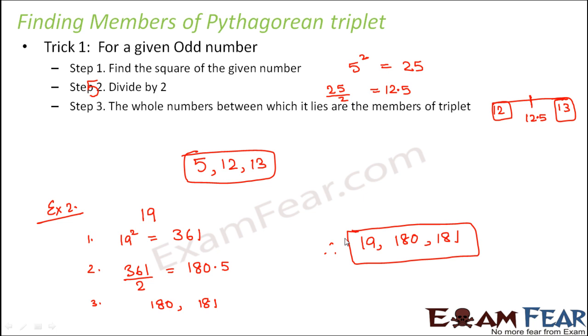So 180 and 181 are the other 2 members of the Pythagorean triplet. Now how do you verify that whatever we have done with this trick is giving the right results? So for verification what we can do is let's see if these 3 numbers satisfy the relationship of Pythagorean triplet. So for that what we will do, we will find out 19 square added to 180 square. So this comes out to be 32400 plus 361 which is equal to 32761.